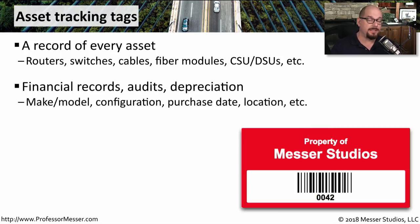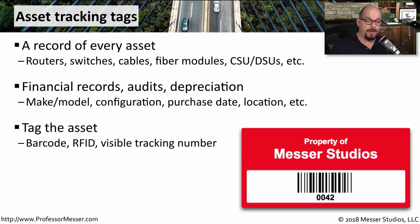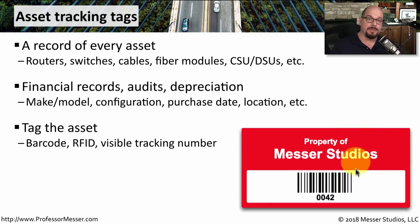You'll now have a database of the exact make and models of the devices in your organization, how they're configured, perhaps purchase date information, and where they might be located. The tag that you use might have a number on it that anybody can reference over the phone. There could be a barcode, which makes it easy to check in or check out a particular asset. Or you might have RFID built into the tag itself so that you can easily track exactly where this particular device is going.